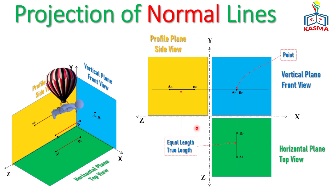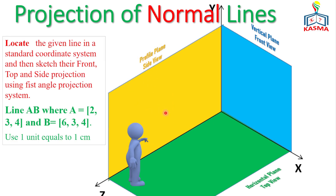Let's use an example for illustration. Locate the given line in the standard coordinate system and sketch the front, top, and side projections using first angle projection. The line is AB, where point A is at (2, 3, 4) in X, Y, Z respectively, and point B is at (6, 3, 4) in X, Y, Z respectively.